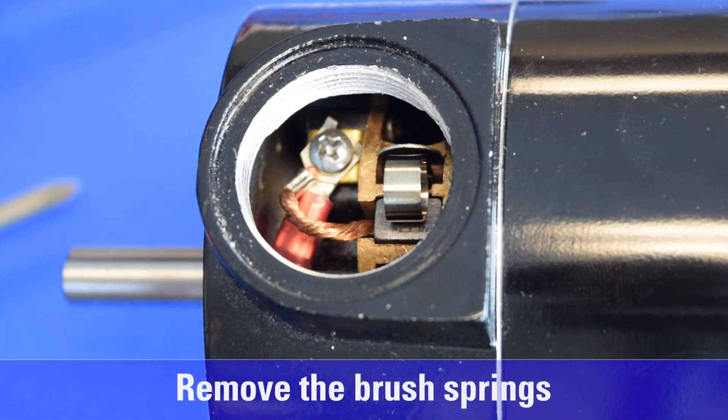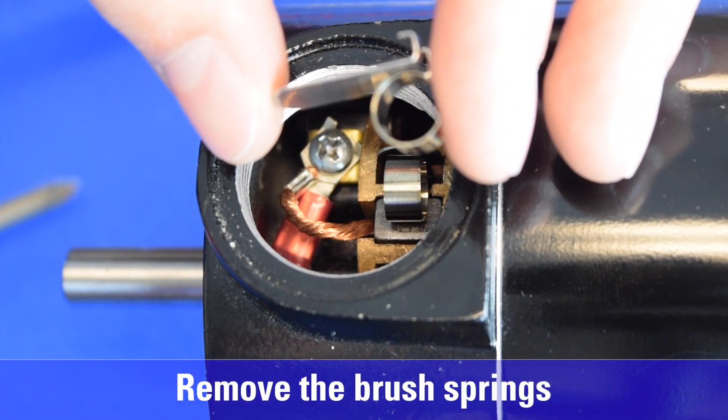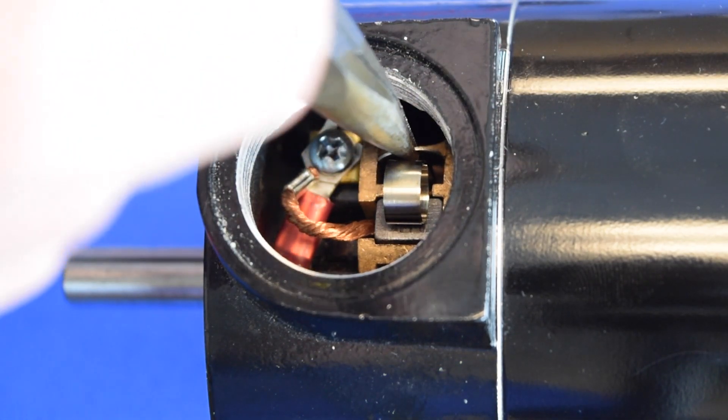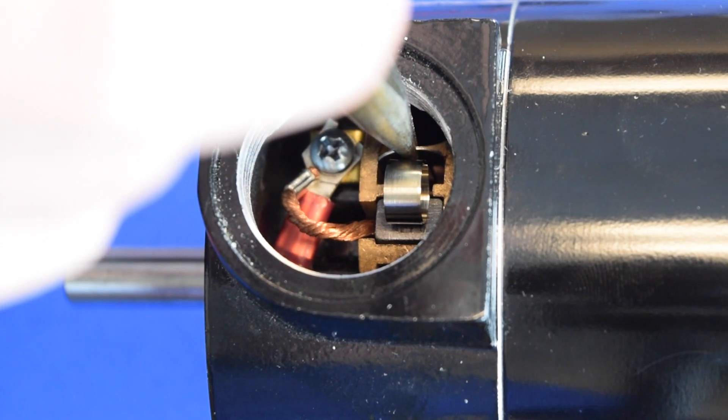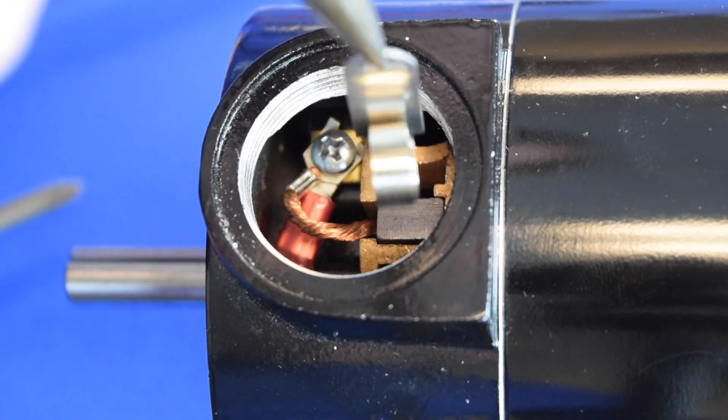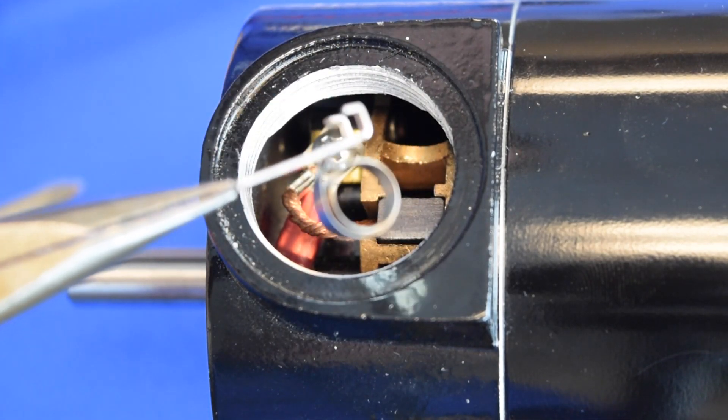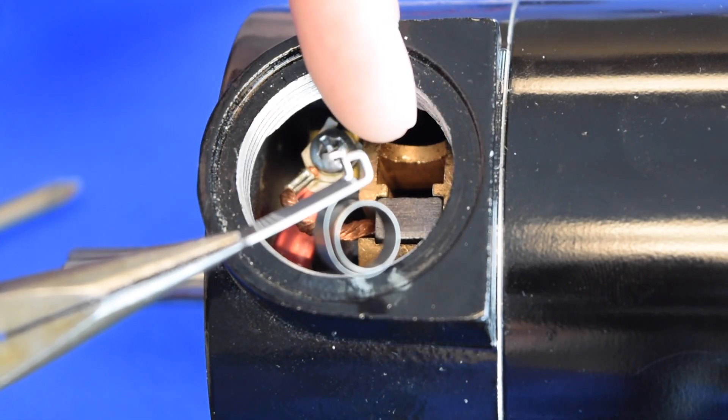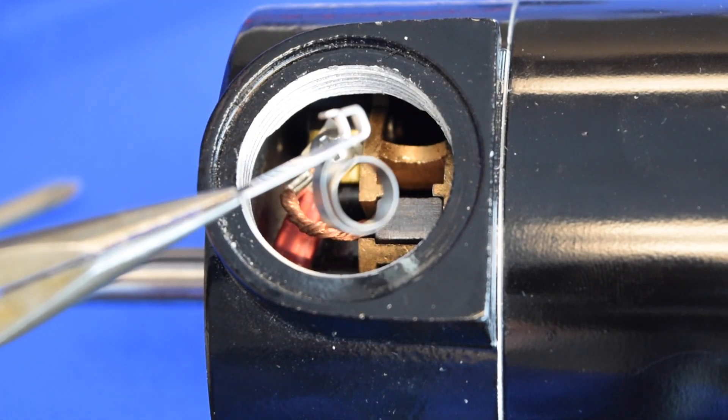The brushes are retained by constant force roll type springs. To remove a spring, first locate the flat part of the spring which points outward. Then, grasp the flat part of the spring with a pair of long nose pliers. There is a hook at the other end of the spring that must be disengaged from the bottom edge of the brush box. Press inward on the spring to unhook the spring.